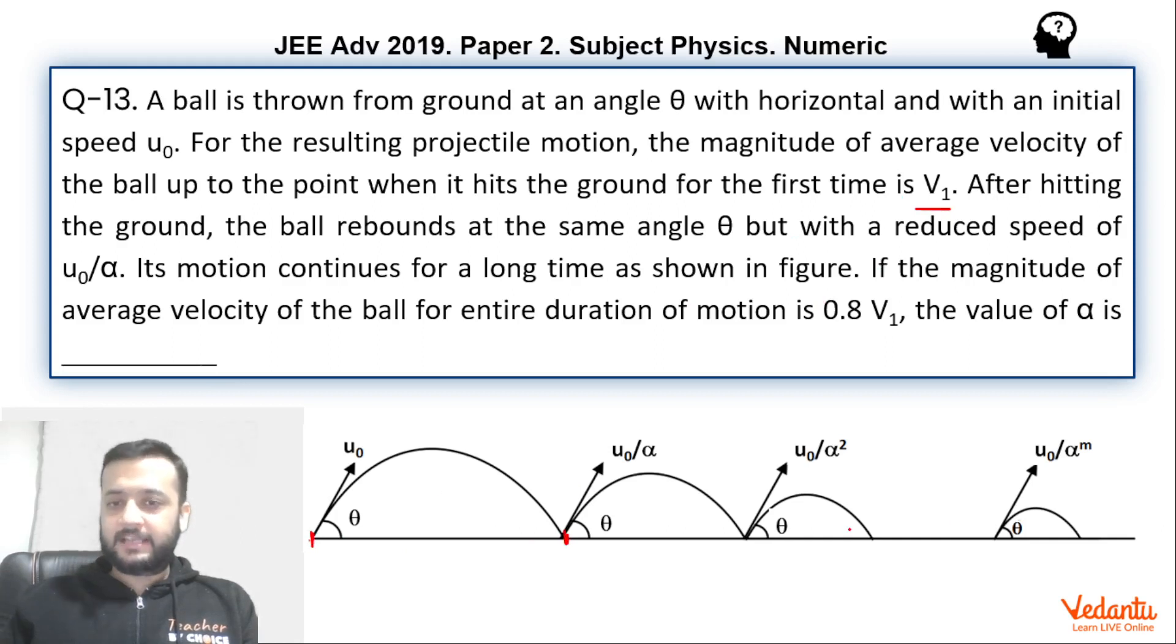And for the entire journey the average speed is 0.8v₁. Using this data we have to find the value of α where α is the factor by which speed decreases after every bounce. The angle of projection, or we can say angle of rebound, is same θ, θ, θ. It remains the same. Using this data we have to find the value of α, the factor by which speed is decreasing after every bounce.